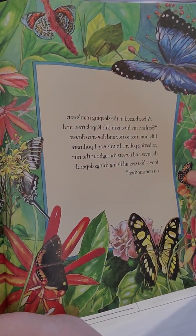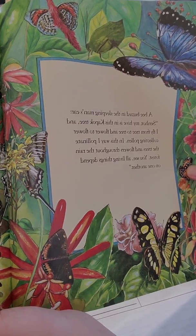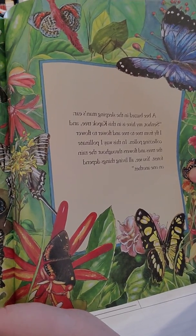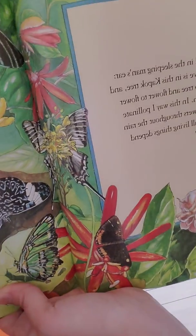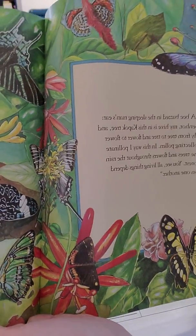A bee buzzed in the sleeping man's ear. Senor, my hive is in this Kapok Tree, and I fly from tree to tree and flower to flower, collecting pollen. In this way, I pollinate the trees and flowers throughout the rainforest. You see, all living things depend on one another.